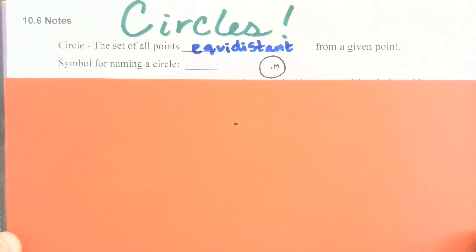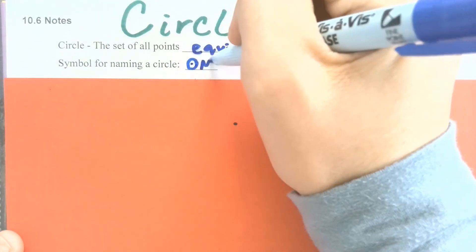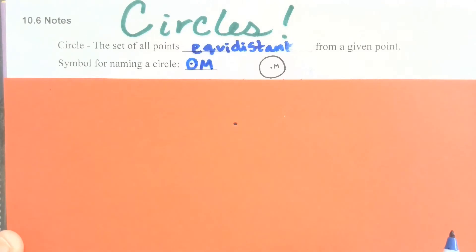The way that we name a circle, if we've got our circle right here, we name it by its center, so we would call it Circle M. And our symbol for that, if we didn't want to use the whole word, we would just draw a circle, it does have a little dot in it, and we would say Circle M.